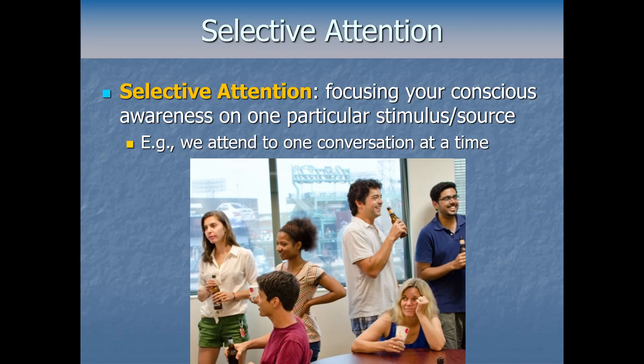Selective attention is being able to focus your conscious awareness on one particular stimulus or source, like being engaged in one conversation at a party even though other people nearby are also chatting. If you're engaged in your conversation, you'll probably have no idea what other people are talking about. Whereas if you zone out, you might catch pieces of another conversation and decide it's interesting enough to covertly shift your selective attention there. This ability has been called the cocktail party effect, and the question of how our brain does it is called the cocktail party problem — an intrinsically challenging problem because there can be so much information going into our ears all at once.